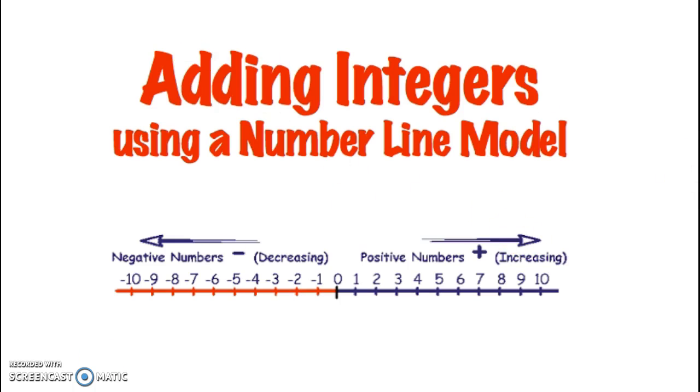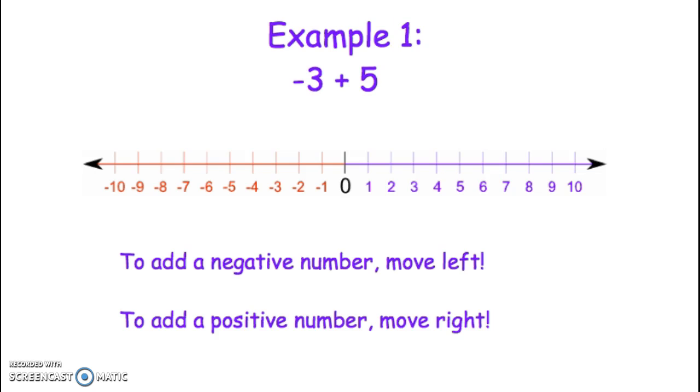So we're going to look at quite a few examples here. We'll start with the example negative 3 plus 5. I want you to notice that when you're using a number line, when you want to add a negative number, you need to move to the left. When you want to add a positive number, you're going to move to the right.